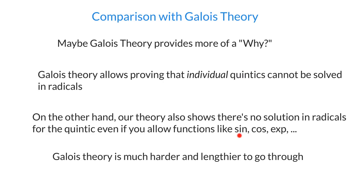You can add other multi-valued functions beyond radicals. There's something called the Bring radical, which I think is essentially the solutions to x to the fifth minus x plus a, and if you add those as a primitive operation you can solve all polynomial equations. So you need another multi-valued function to do it — probably something like an elliptic function.